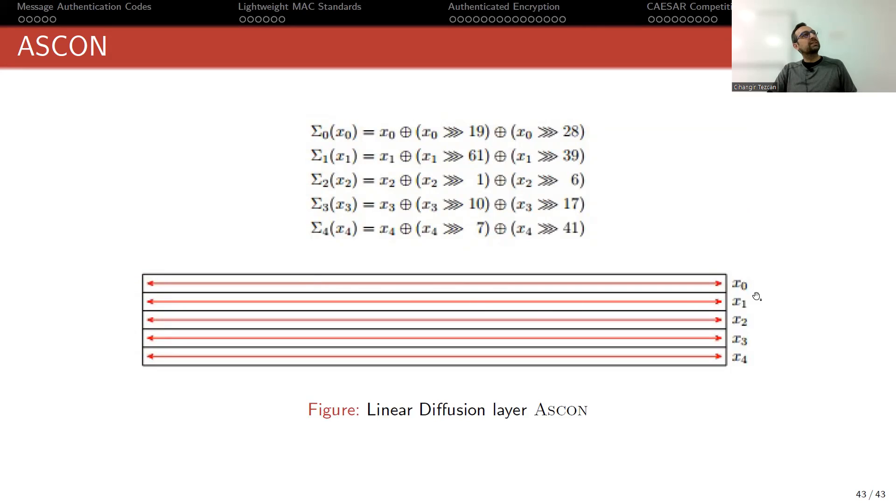Now we need a diffusion layer, so we do it by these rotations. For instance, X0, the top row, is put here, then you rotate this row 19 bits to the right, then 28 bits to the right, and you XOR these three values and write the result here. You perform different rotation numbers to different rows, so this way you kind of mix everything. That's all.